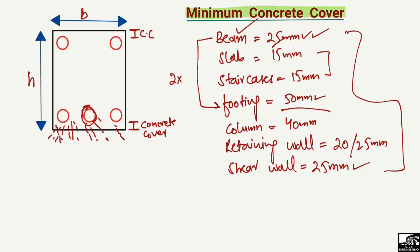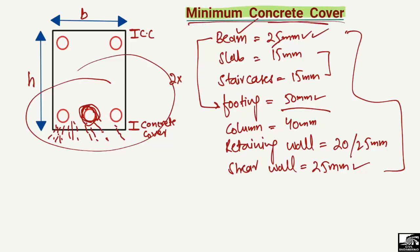Corrosion reduces the tensile capacity of the steel reinforcement, and when the tensile capacity decreases, the overall load capacity of the structural member decreases. To avoid this, we must provide the minimum concrete cover for all structural members.